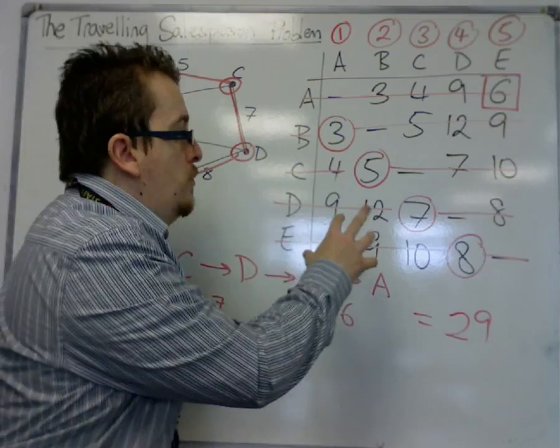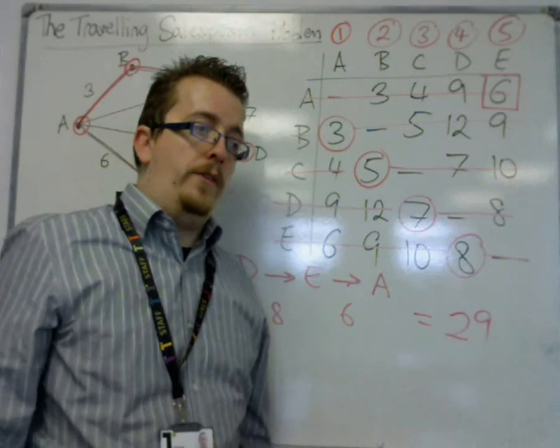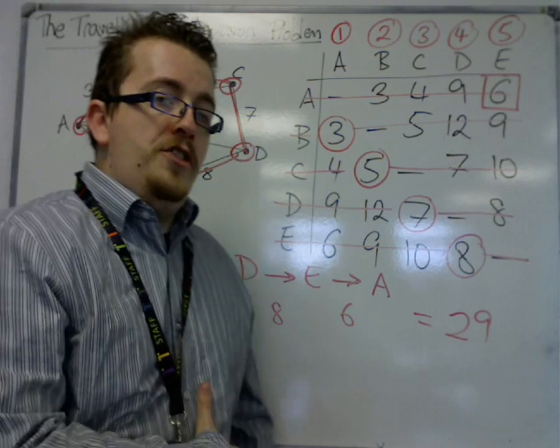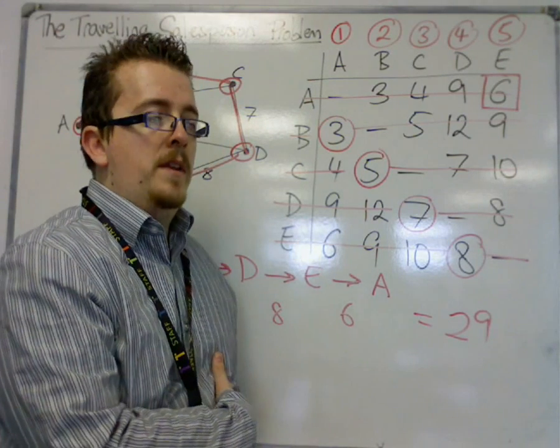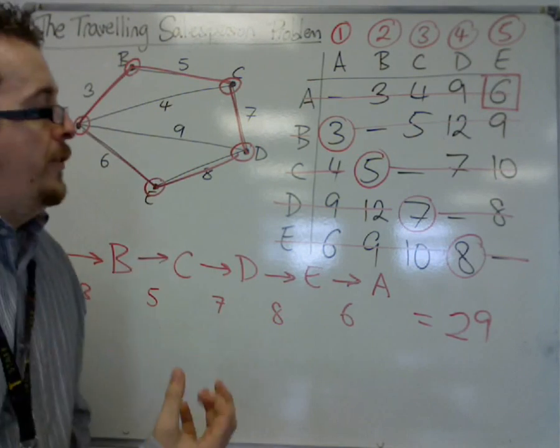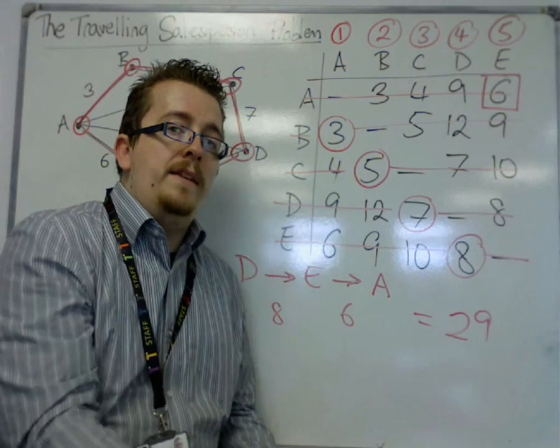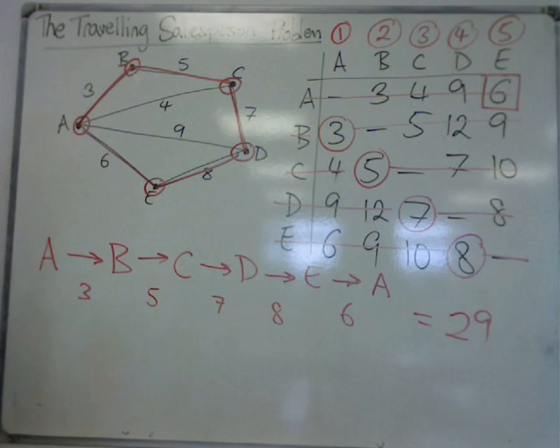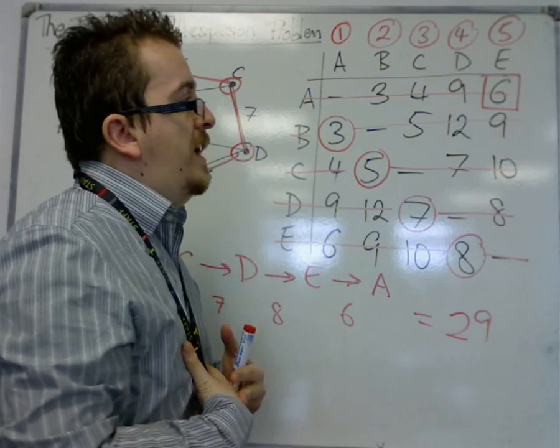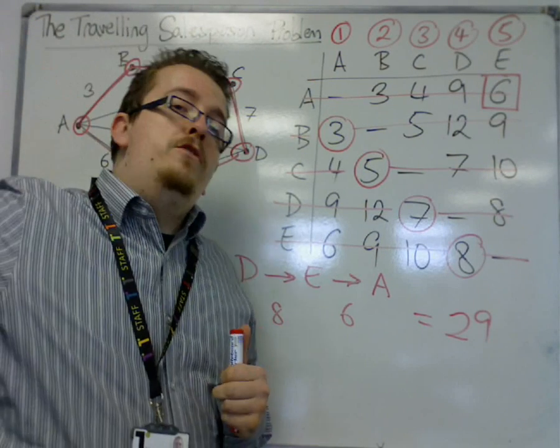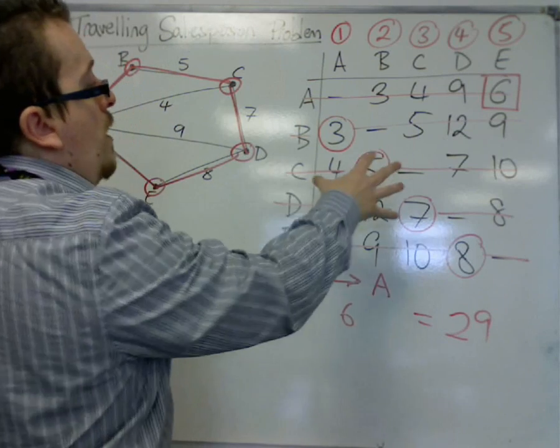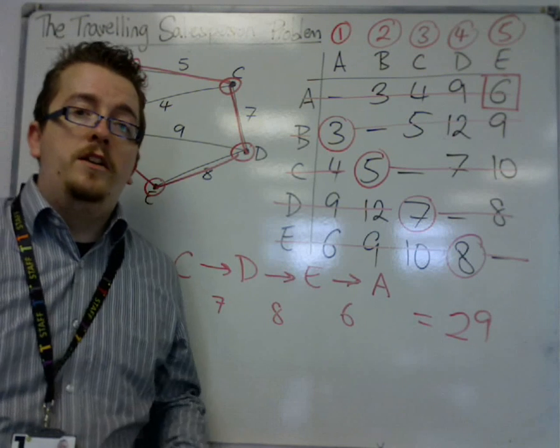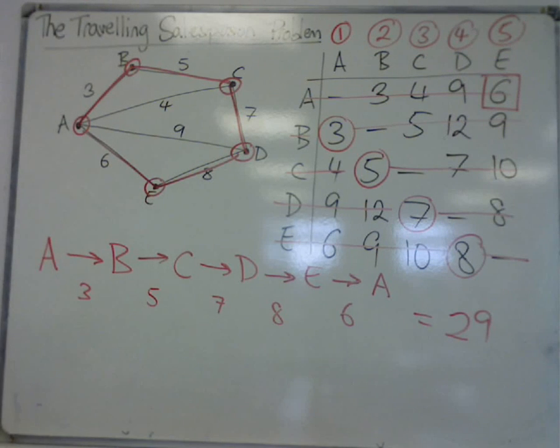You can do nearest neighbour without drawing anything on the matrix. And in my opinion, if you can do that, that's probably better. The reason being is that a nearest neighbour and a lower bound algorithm question usually come hand in hand. There is only going to be one matrix drawn. And it's much easier if you do the lower bound algorithm on that matrix rather than nearest neighbour. Because nearest neighbour, you can just do without. It just takes a little bit of practice.